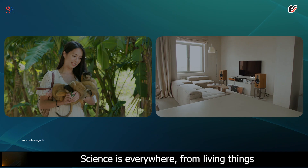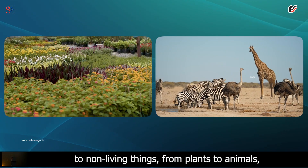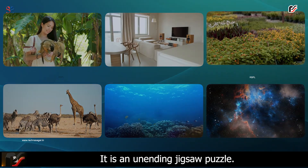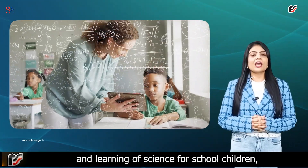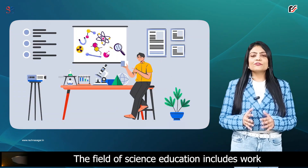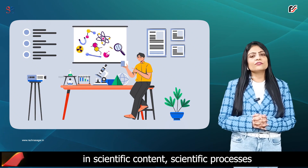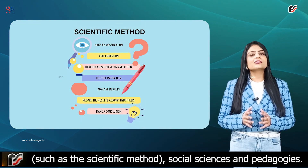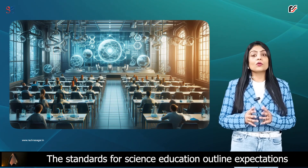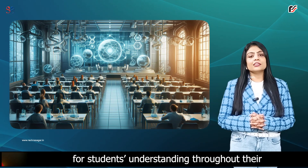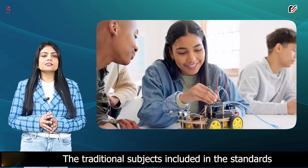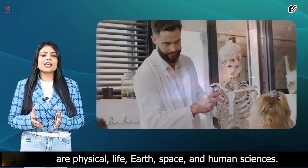Science is everywhere — from living things to non-living things, from plants to animals, from the depths of the oceans to outer space. It is an unending jigsaw puzzle. Science education is the teaching and learning of science for school children, college students or adults within the general public. The field of science education includes work in scientific content, scientific processes such as the scientific method, social sciences and pedagogies. The standards for science education outline expectations for students throughout their entire school education and beyond. The traditional subjects included in the standards are physical, life, earth, space and human sciences.